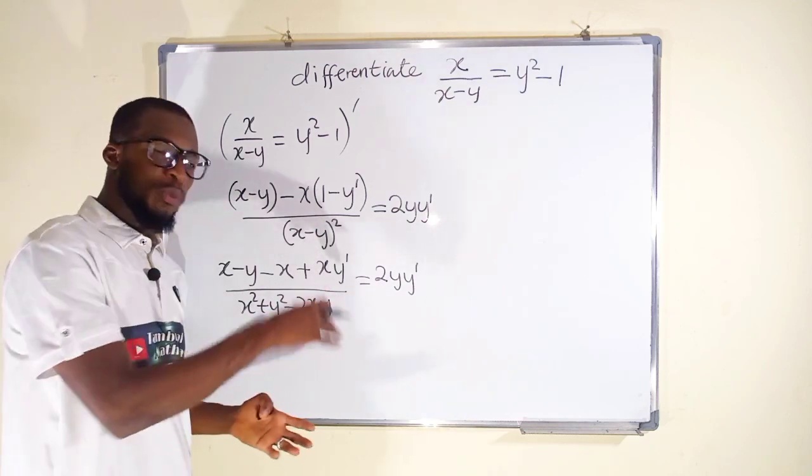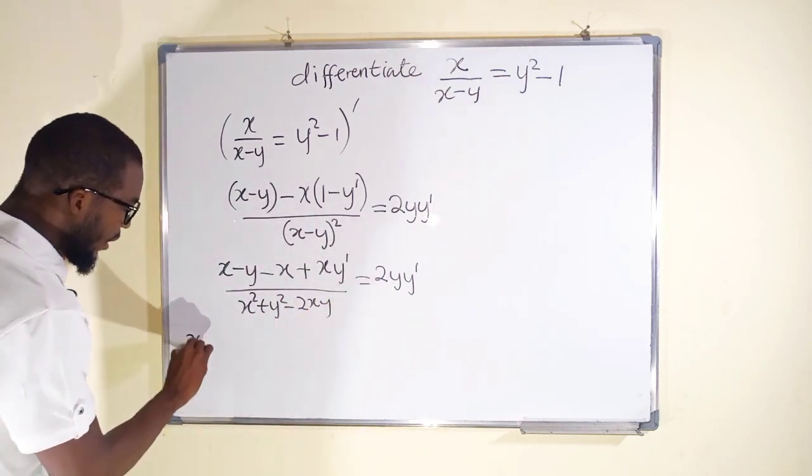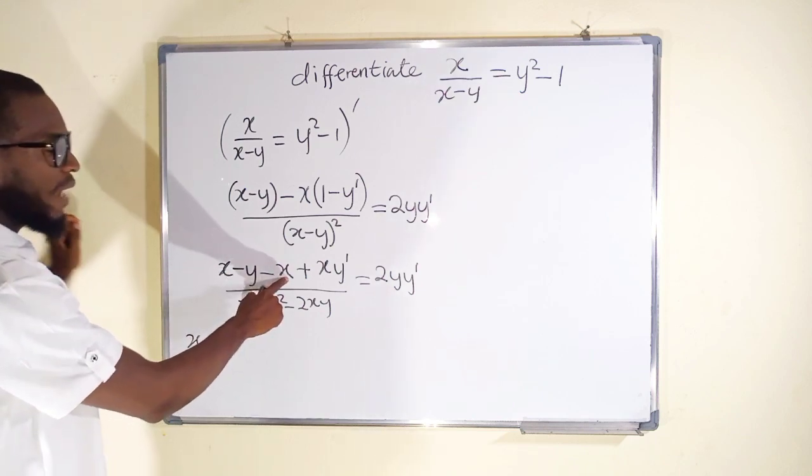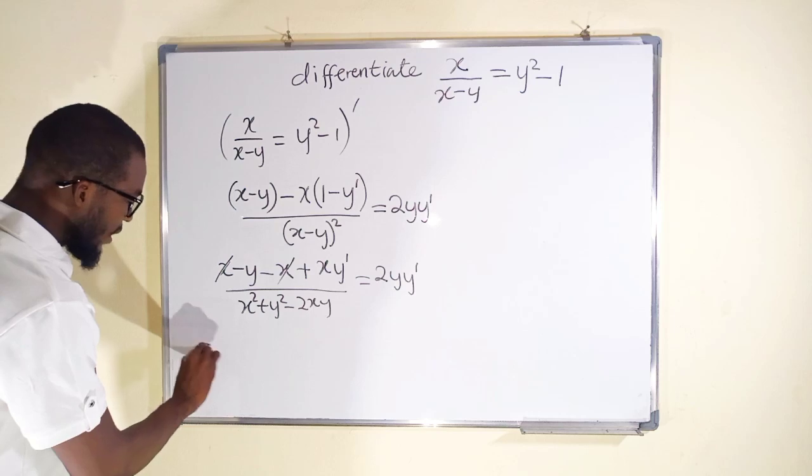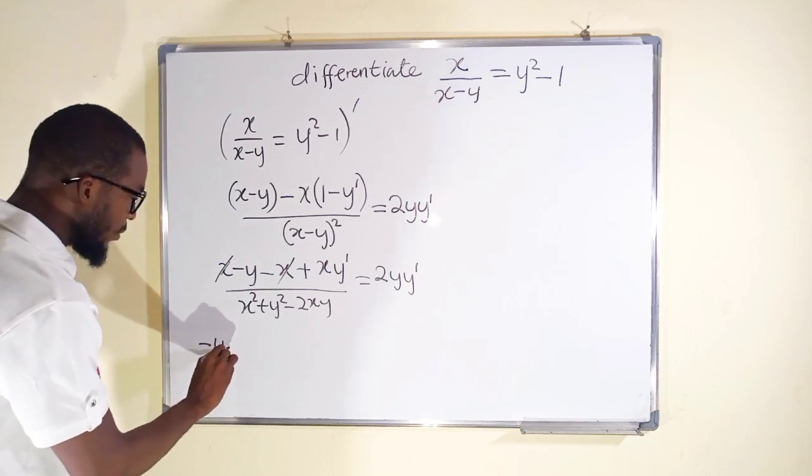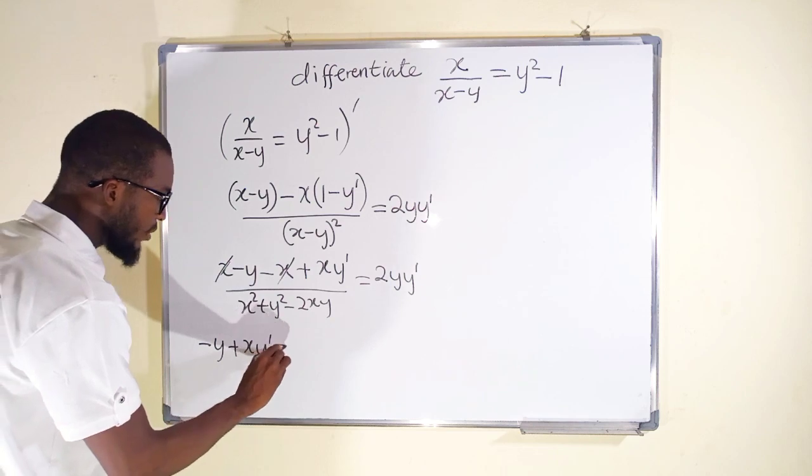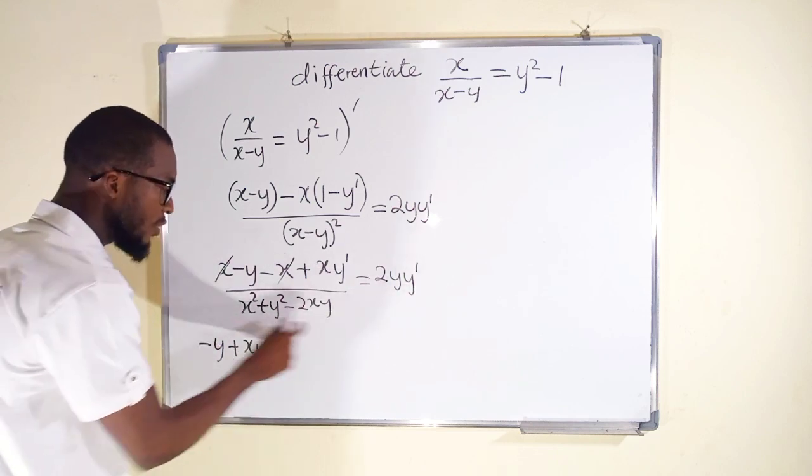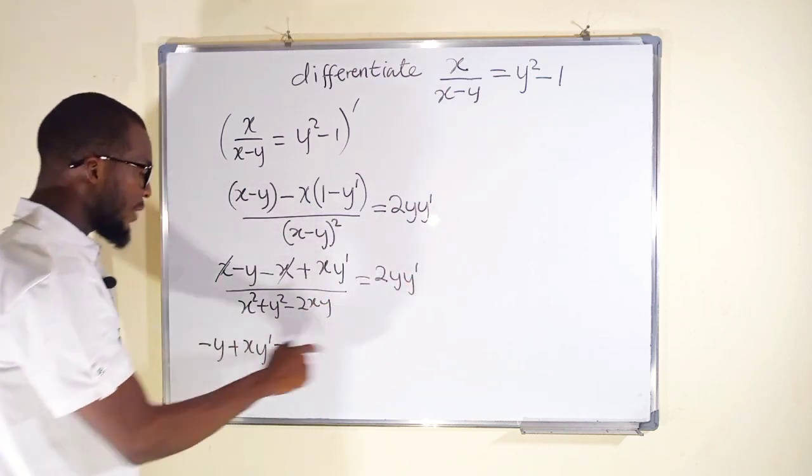To clear the fraction we are going to multiply both sides by this denominator. So we have x, okay, x positive and x negative they will cancel out. What we have left is negative y plus xy prime. And to the right we are going to take this and multiply each term in this expression.